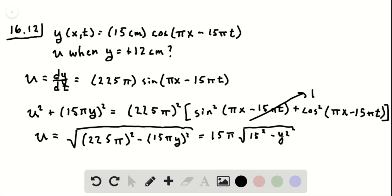So we just put in 12 centimeters here. Then u is going to be plus or minus 135 pi. We don't care about the sign because we just want the speed.